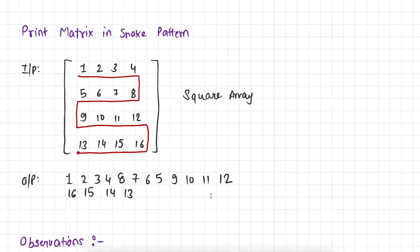Alright, let's begin this video with the very first problem on matrix. As you can see here we are given a matrix and this matrix is a square matrix. Now what does it mean by square matrix? A matrix is a square matrix if count of rows is exactly equal to count of columns. As you can see here there are four rows and four columns in this matrix and our task is to print all the elements in snake pattern.